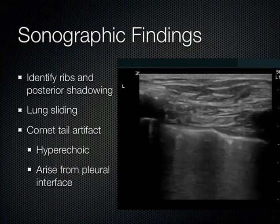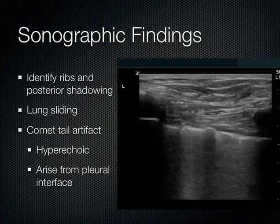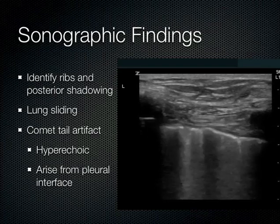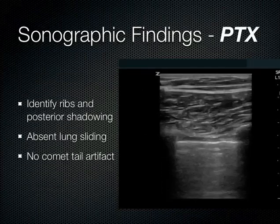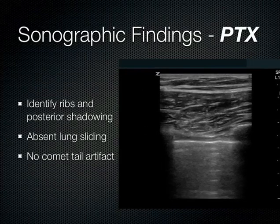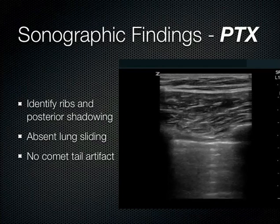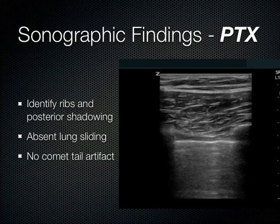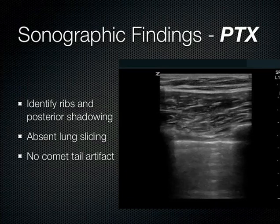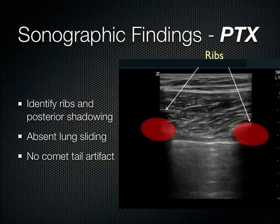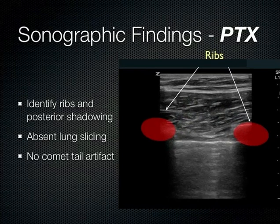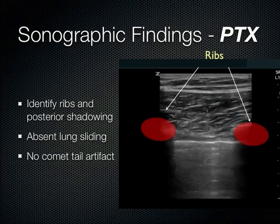For pneumothorax: this patient is breathing but not holding their breath. You do see some chest wall movement because the intercostal muscles are still contracting, but as far as sliding — you don't see anything. Sliding looks like marching ants or shimmering along the pleural line. If you don't see that, you have to be concerned that the lung is not touching the chest wall. You can also appreciate there's no comet tail, and there may even be a hint of A-lines at the bottom of the screen.